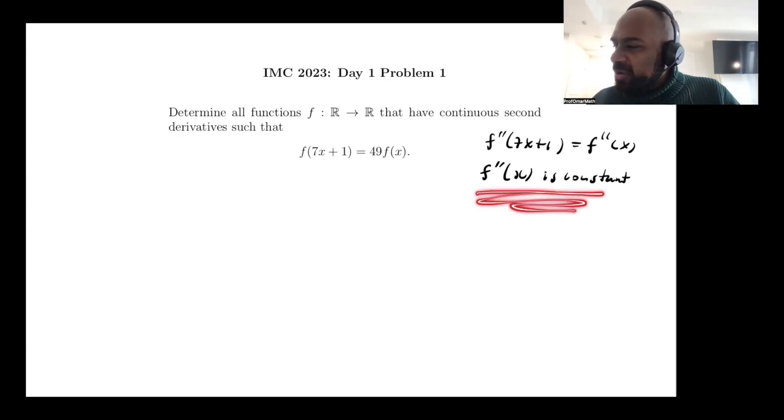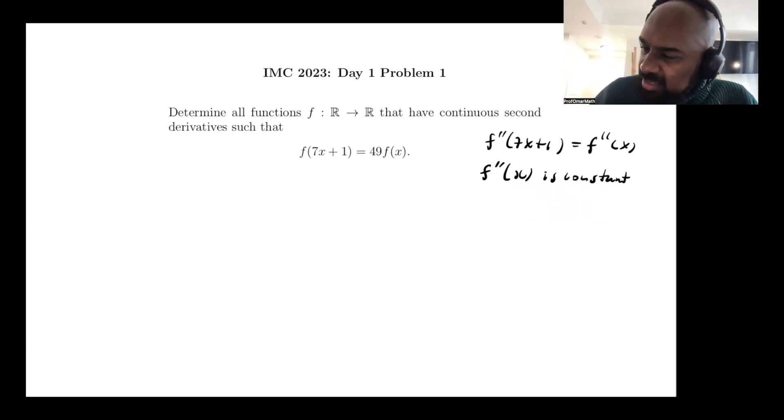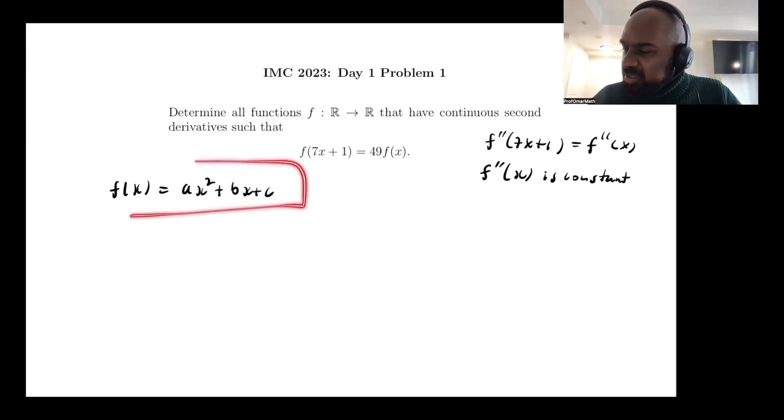Okay, so if f'' now is constant, then we can assume that f of x itself is going to be at most some quadratic function in x. Right, and the reason is because these are precisely the functions whose second derivatives are constant. You can see that by integrating this thing twice. So how do we determine what actual functions work? Well, we have some information by substituting into this original equation.